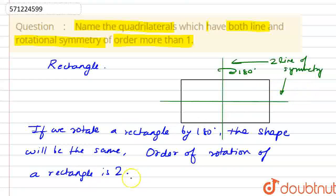That is, two lines of symmetry and order of rotation is also 2. So therefore, our final answer will be a rectangle. Okay? Thank you.